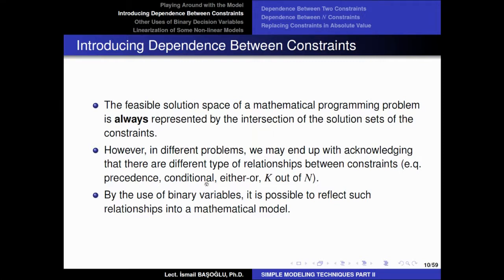There are conditional constraints which can be defined in such a sense. There are either-or constraints, which means one or the other of the constraints should be satisfied, but both of them cannot be satisfied at the same time, or we should satisfy at least one of them but they cannot be satisfied at the same time. Or we can simply say that out of n constraints, we need to satisfy exactly or at least k of them.